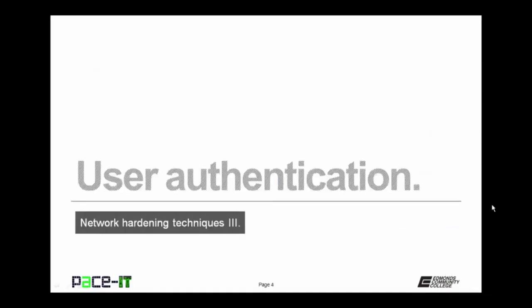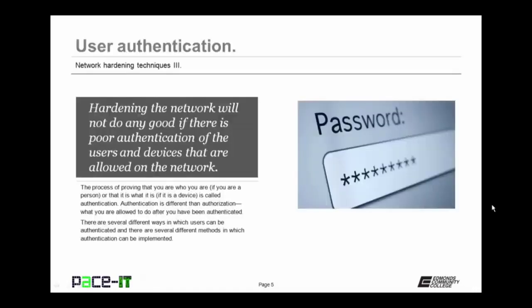I'm going to start by talking about user authentication. Hardening the network will not do you any good if there is poor authentication of the users and devices that are allowed on the network. The process of proving that you are who you say you are — if you are a person — or that you are what you say you are — if it's a device — is called authentication. Authentication is different than authorization. Authorization is what you are allowed to do after you have been authenticated. There are several different ways in which users can be authenticated, and several different methods in which authentication can be implemented.